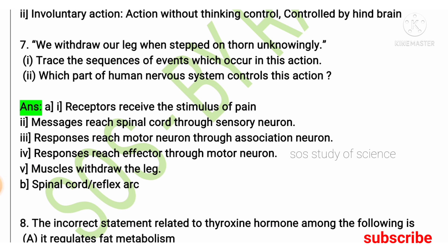Moving to question 7B: which part of the human nervous system controls reflex action? The right answer is the spinal cord. You can also write reflex arc.